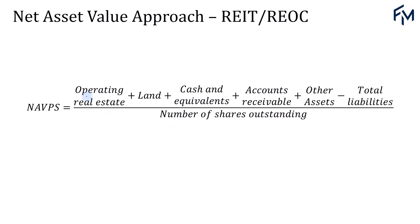In the formula, the net asset value per share equals the operating real estate value plus any land, cash and equivalents, accounts receivables, and other assets, minus total liabilities, and then divided by the number of shares outstanding.